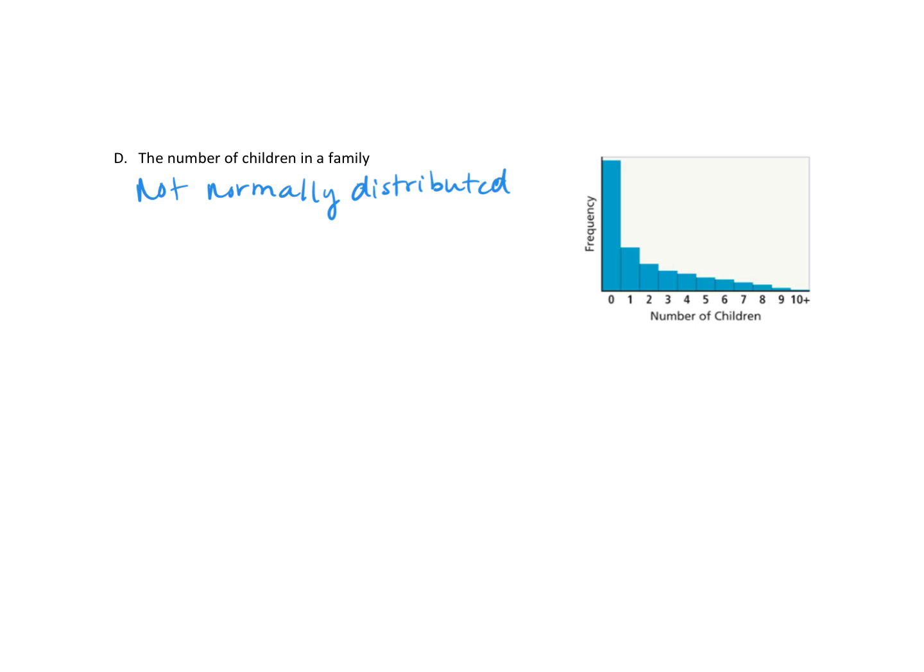The reason why is most families have 0, 1, 2, or 3 children. But very few families have 8, 9, 10, or more children. That's why it is skewing to the right. These numbers are getting smaller and smaller. It's definitely not symmetrical.